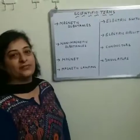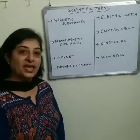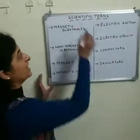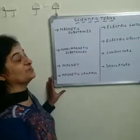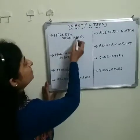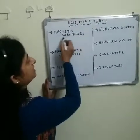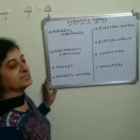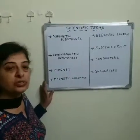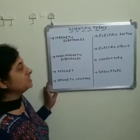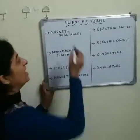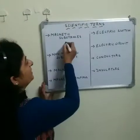Good morning everyone. Today we will discuss about scientific terms. So first of all there is a term: magnetic substances. Magnetic substances are those substances which are attracted towards the magnet.